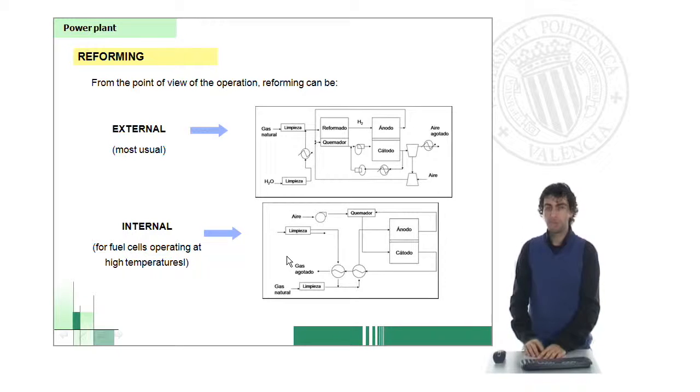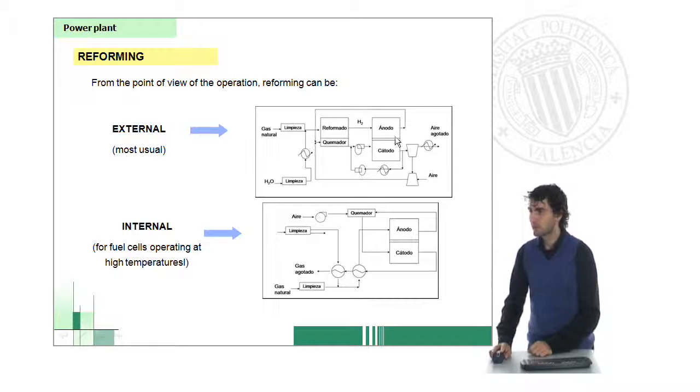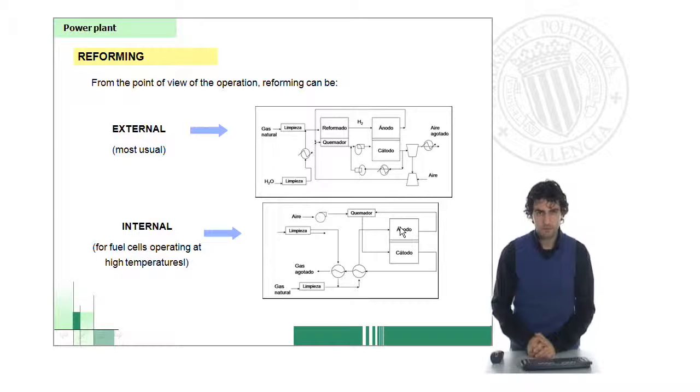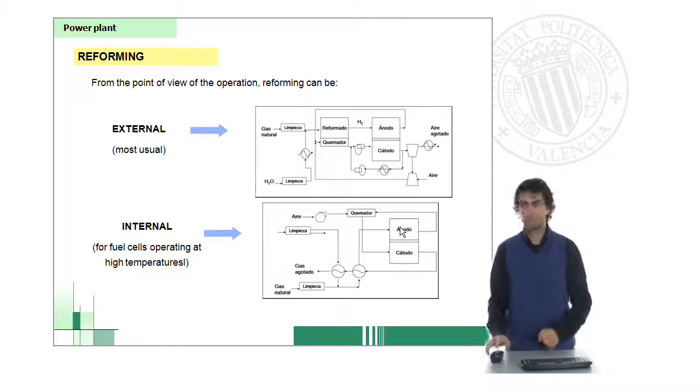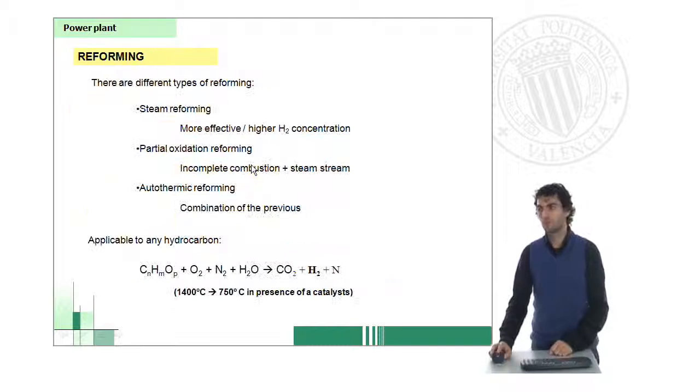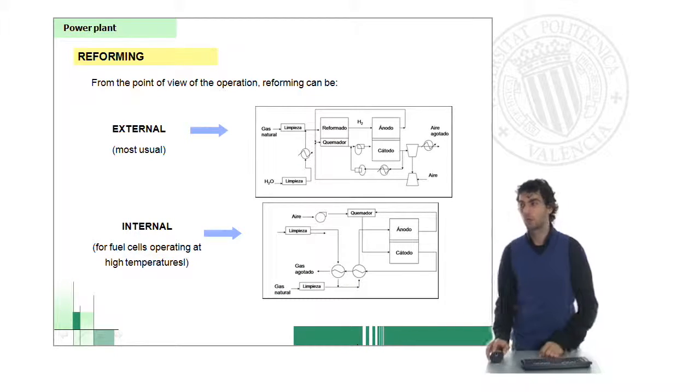Reforming can be either external if it's carried out outside the fuel cell, or internal if it is carried out inside the fuel cell. This can only be achieved if the fuel cell is working at high temperatures. Because, again, that is a very endothermic reaction. So we need to have very high temperatures if we want this reaction to work properly.